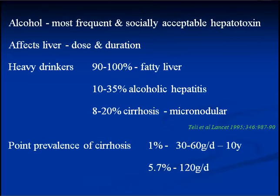Alcohol is the most frequent and socially acceptable hepatotoxin. There is no party that is successful without alcohol, and there is no marriage where if alcohol is not served it would be well taken. So it has become a socially acceptable hepatotoxin and it affects the liver depending on the dose and the duration. If one is a heavy drinker there is a 90 to 100% chance of developing fatty liver, a 10 to 35% chance of developing alcoholic hepatitis, and 8 to 20% ultimately develop cirrhosis of the liver. This cirrhosis is usually micronodular except when the patient has abstained from alcohol for a long time.